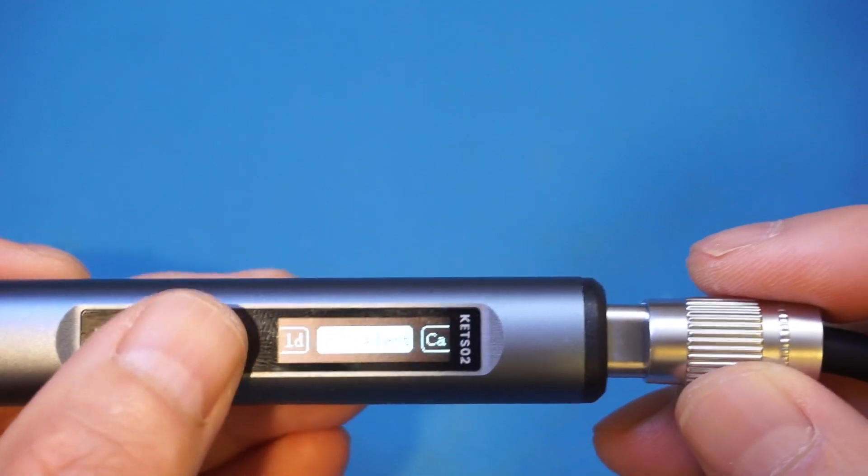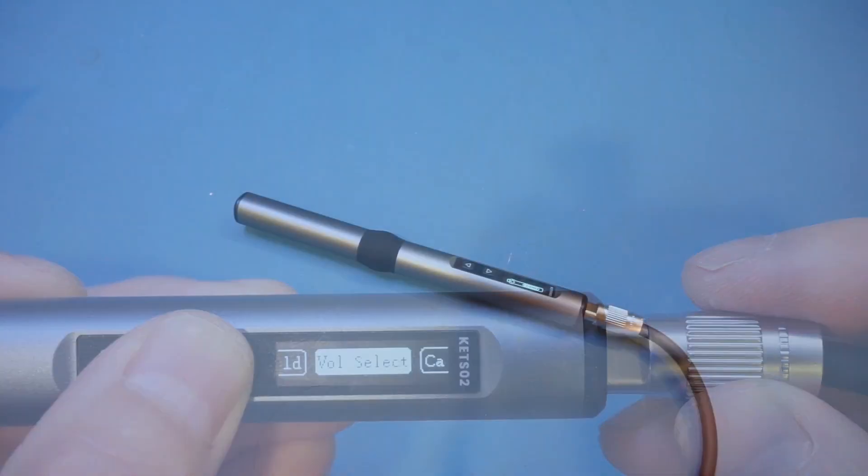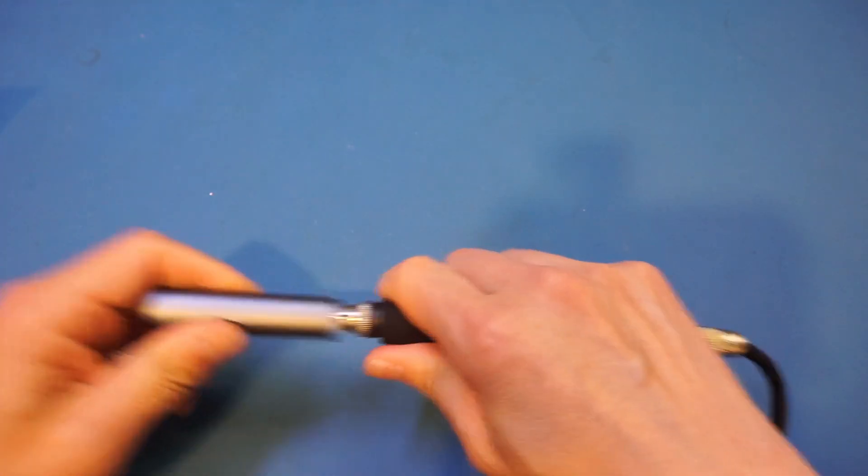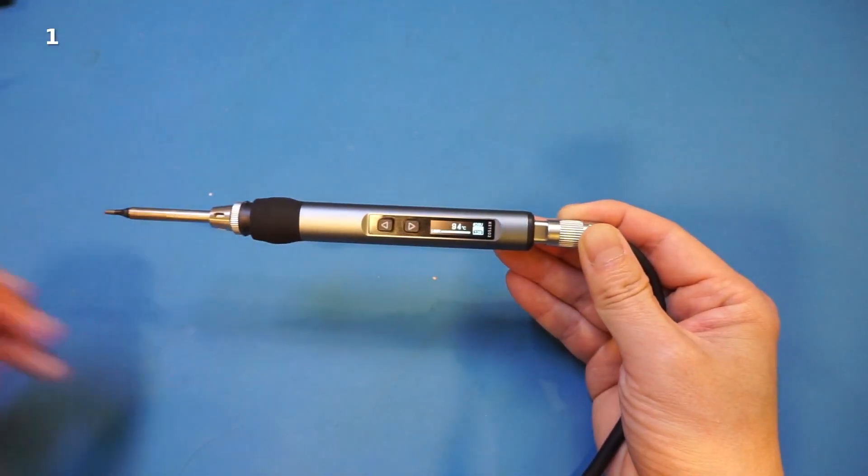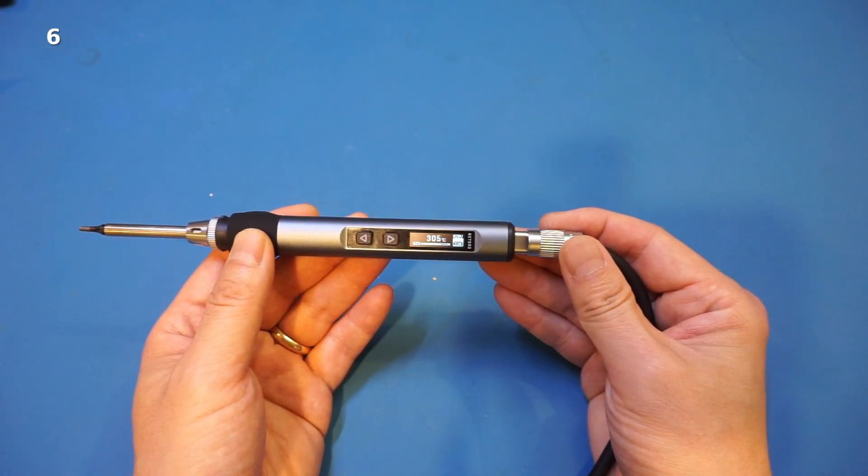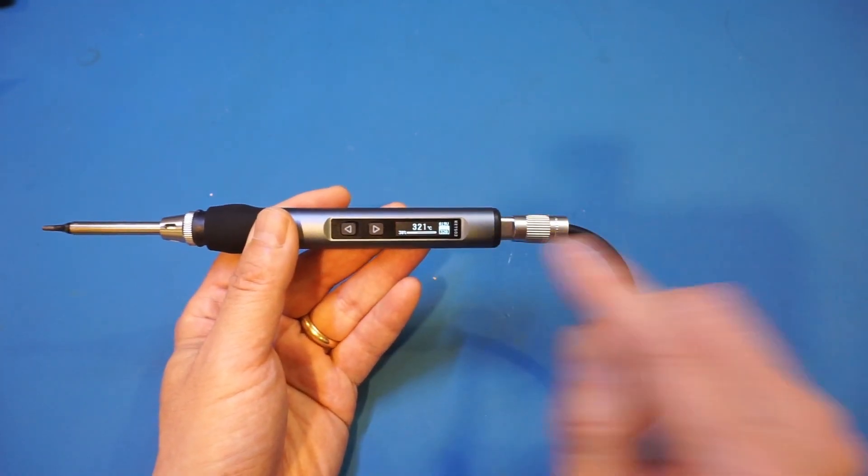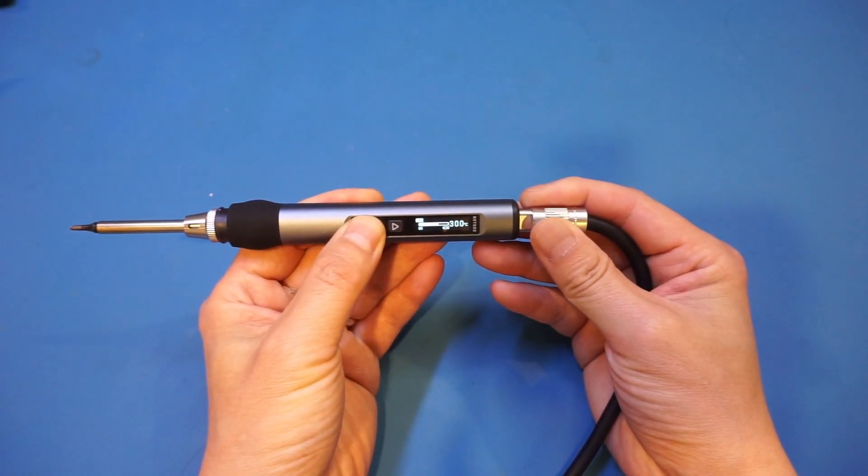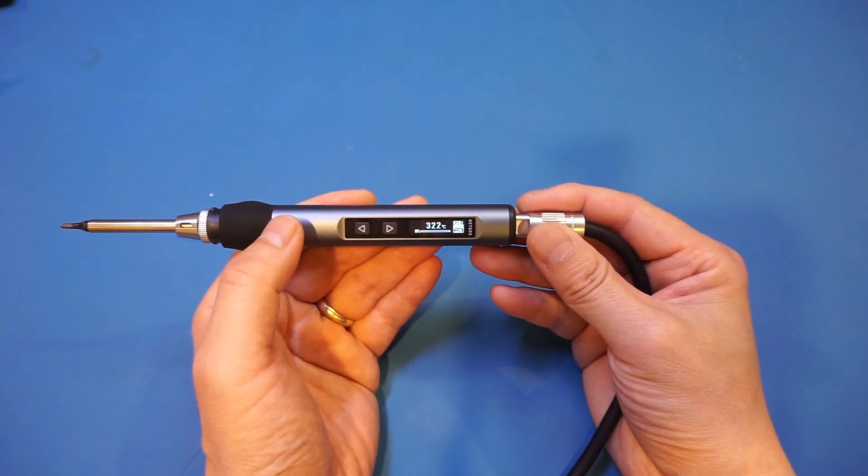Those are the settings on this soldering iron. Let's power it on and do some real world testing. It heats up relatively quickly and right now the operating temperature I'm setting is at 320 degrees.